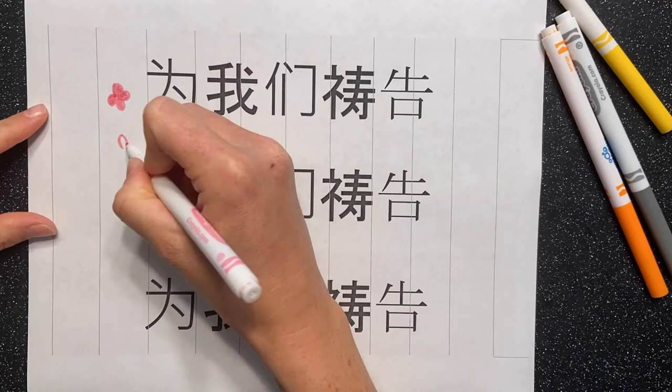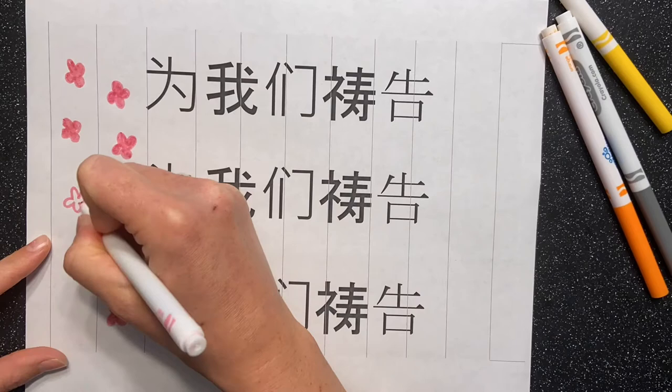After you've printed off your template, take some markers and decorate it however you'd like to. Since our saint and his companions are from China, I decided to illustrate my lantern with Chinese cherry blossoms.